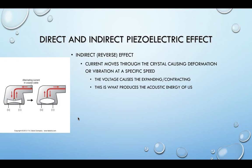What happens is a current moves through the crystal and causes deformation or vibration of that crystal at a very specific speed. We send AC current into the crystal, and that causes the crystal to expand and contract. That expansion and contraction within the capsule — which is the sound head or transducer — pushes air molecules out and in, allowing those molecules to get pushed close together or spread apart. This is how acoustic energy is produced inside the transducer head and then transmitted out through a conducting medium into the tissue.